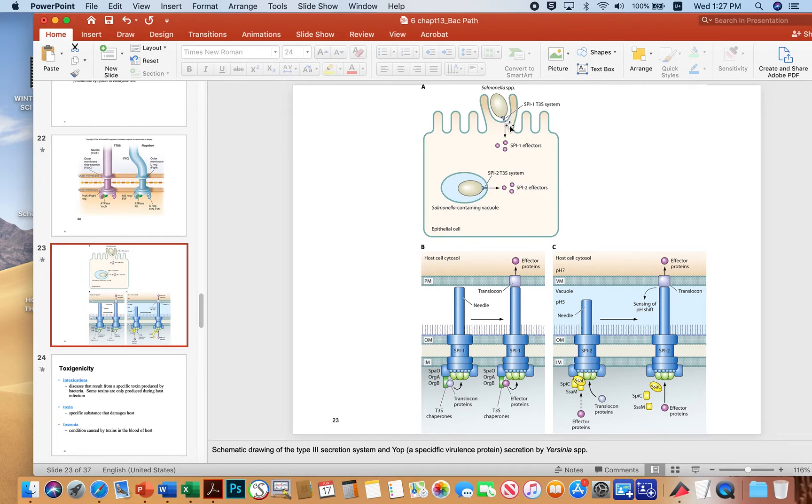This SPI injects effector molecules into the cell that trigger the cell to essentially phagocytose the bacteria. You can see it kind of changing the shape of the apical surface here to bring the microbe in. The microbe comes into a vacuole and then uses a second type 3 secretion system from SPI2, from a second pathogenicity island, and that injects additional effector molecules. And what that does then is allows the microbe to survive in the vacuole without being destroyed.